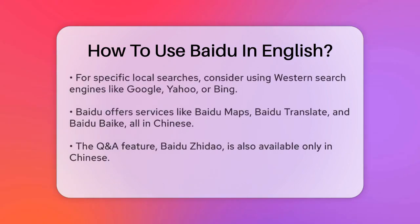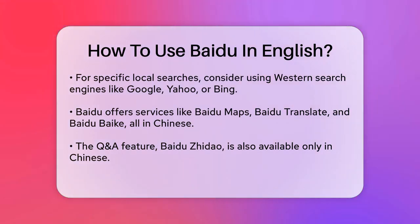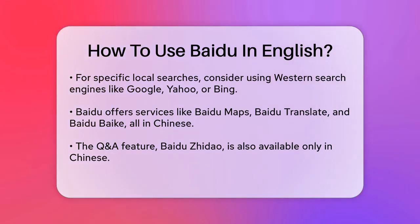If you're looking for specific information, like local restaurants or businesses in China, using English search terms on Baidu won't yield the best results. Instead, you might want to use a Western search engine like Google, Yahoo, or Bing, especially if you're using a VPN to access the Hong Kong version of Google.